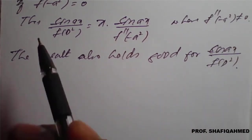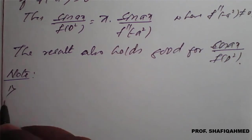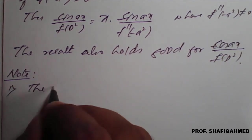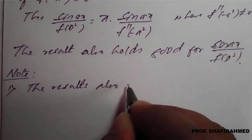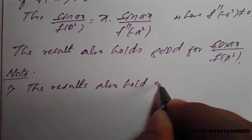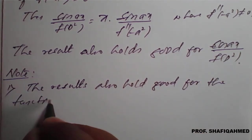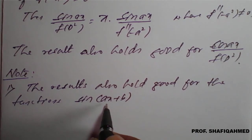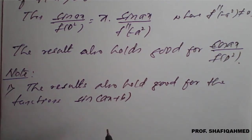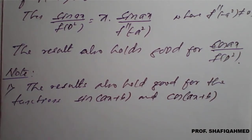Here is an important note — Note 1: The results also hold good for functions like sin(ax + b) and cos(ax + b) forms. At that time, while replacing D² equal to minus a², we have to take the coefficient of x as 'a' and neglect the constant. This also holds for cos(ax + b) form. This is a very important point.